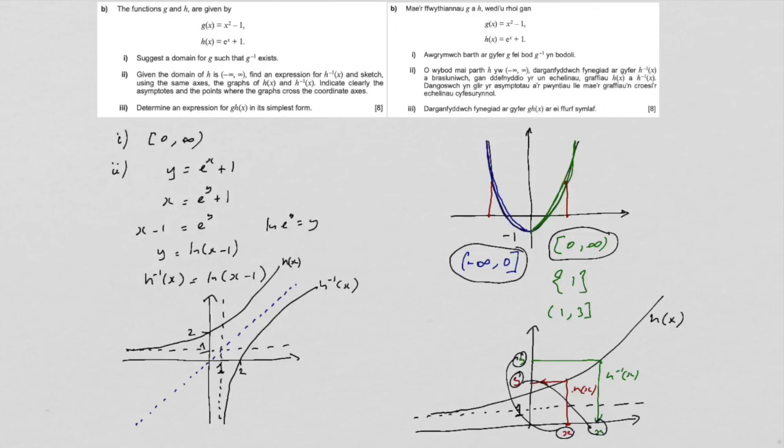Now for part three, which I'm going to squeeze in here. Here we want G of H of x. So G of H of x equals G of e to the x plus one, which is therefore e to the x plus one squared, take away one.